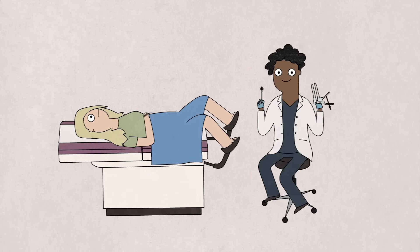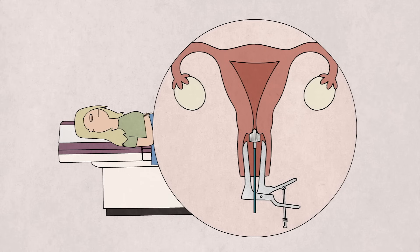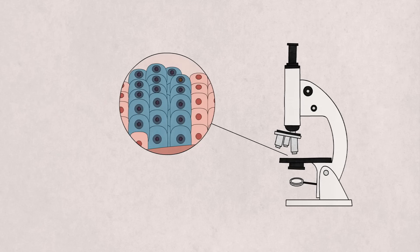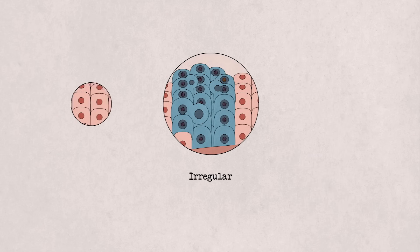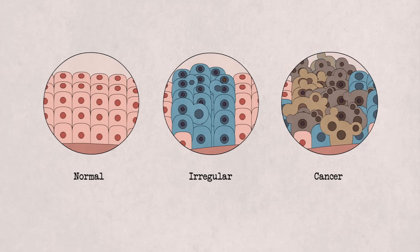Women over 21 can undergo a regular pap smear, where a sample of tissue is gently scraped from the lining of the cervix to test for abnormal cells. A positive test doesn't mean the person has cervical cancer, but rather that there are irregular cells in the cervix that could develop into cancer in the future.